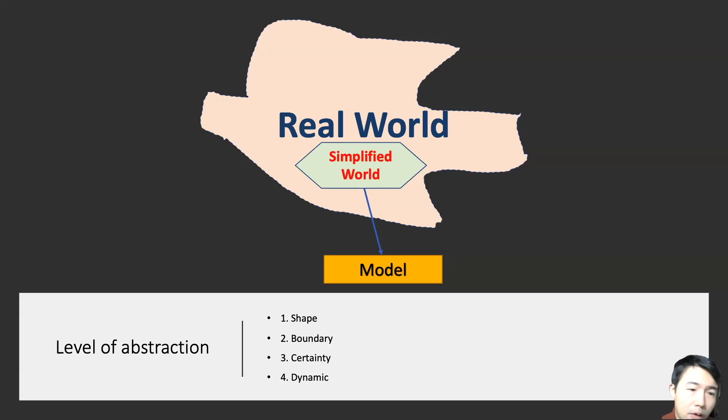This is the level of abstraction. The real world has a lot of shapes, a lot of angles. It's not very clear. The boundary is kind of blurry, not certain, very dynamic. We want to simplify the world where the shape is something fixed, the boundary is clear, and there's some certainty. It's not that dynamic. Based on the simplified world, we create a model which is even more abstracted.